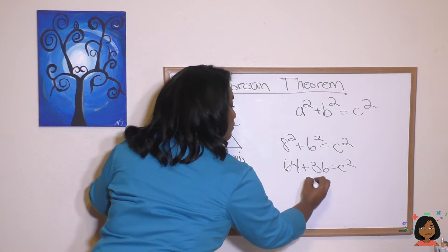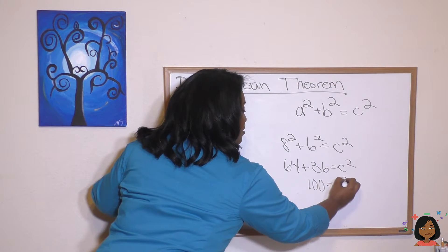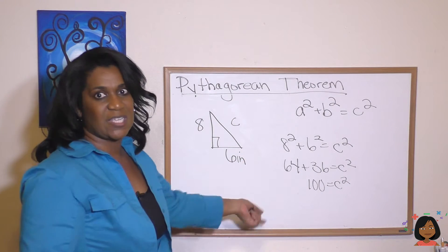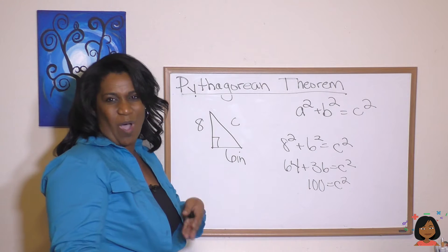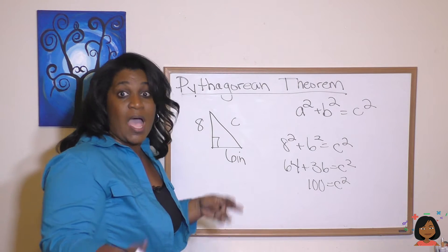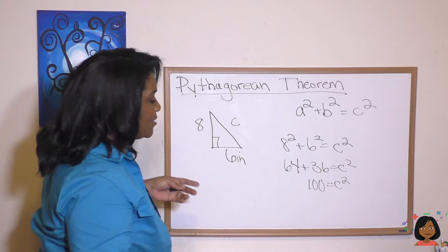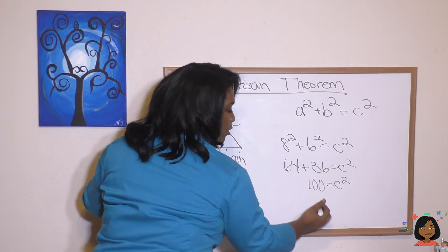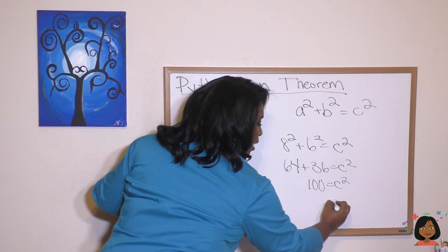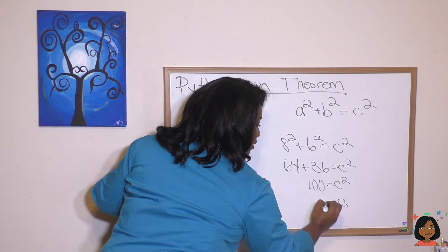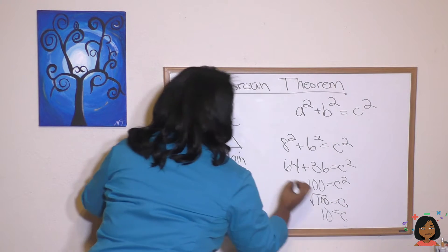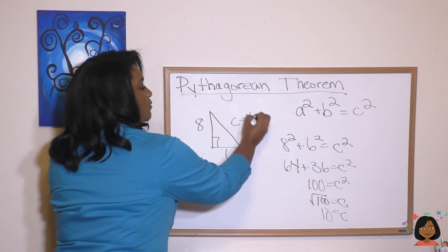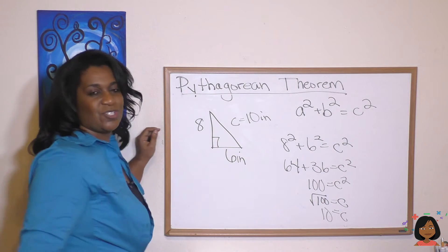We get 100 equals c squared. So essentially, c squared means c times c. What times what equals 100? How about 10 times 10? It's the same thing as saying the square root of 100. So the square root of 100 is 10. So our missing side is 10 inches.